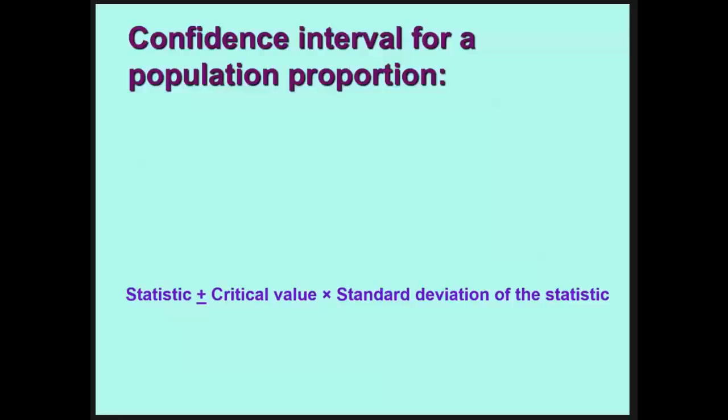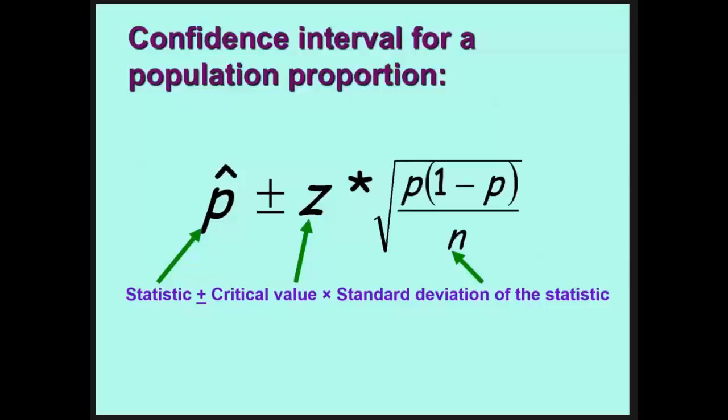Let's talk about constructing a confidence interval for a proportion. Our statistic in terms of a proportion sample is p-hat. Our critical value is z-star. And the standard deviation of the statistic is the square root of p times 1 minus p over n.